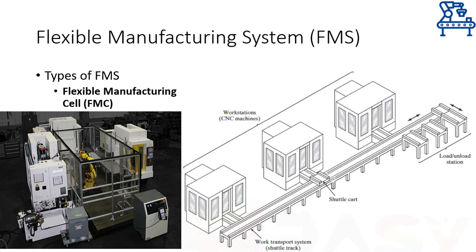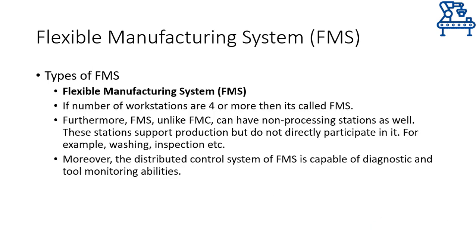Normally, each workstation in this cell is unique in its operation, and the part generally has to visit at least two of the workstations to get completed. The obvious expansion of a flexible manufacturing cell is into a true flexible manufacturing system that comprises four or more workstations. As the number of workstations increases, the inclusion of non-processing workstations also becomes a possibility.